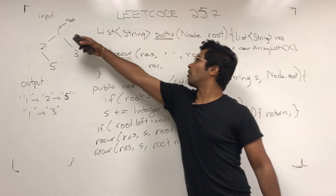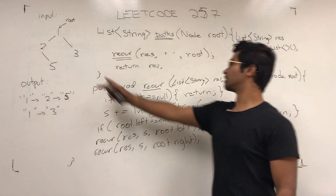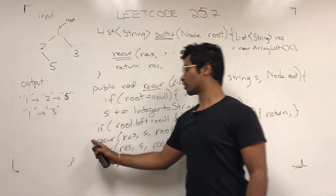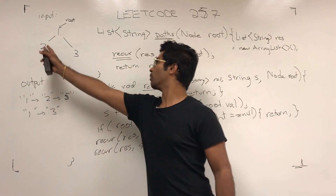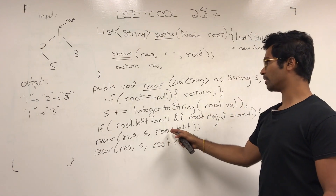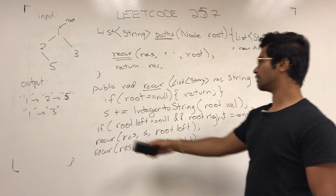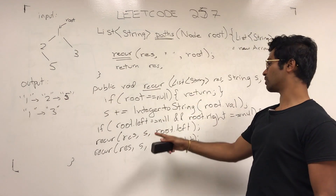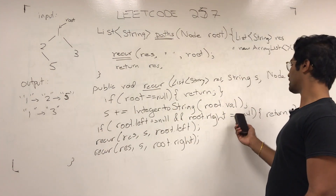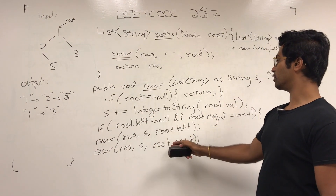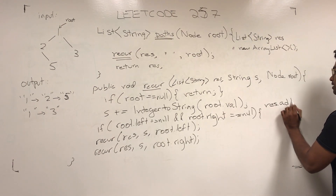Now let's walk through what happens here. At node one, the string '1' gets added and that string s gets passed to each child. This recursive function is going to get a copy of the string which has '1' in it, so both children have that. When it goes to node two, the left is null so it returns, but two's right child which is five doesn't have a left or right so it gets returned after getting appended to the string. We also need to not just return but also add res.add(s) and then return.